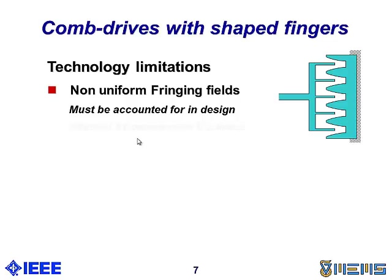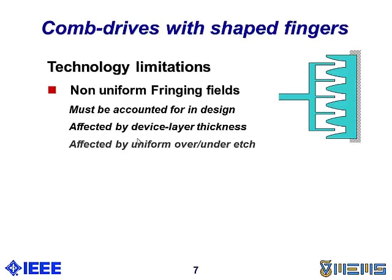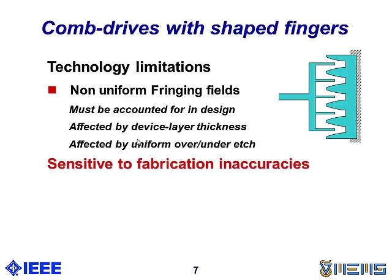It also means that if we have a certain planform, this planform is correct only for a specific device layer thickness. If we have a different thickness, we mess up the fringing fields. Also, if we have a uniform over or under edge of our fingers, we're messing with the fringing fields and therefore, this design is very sensitive to fabrication inaccuracies that would produce wider or narrower fingers.